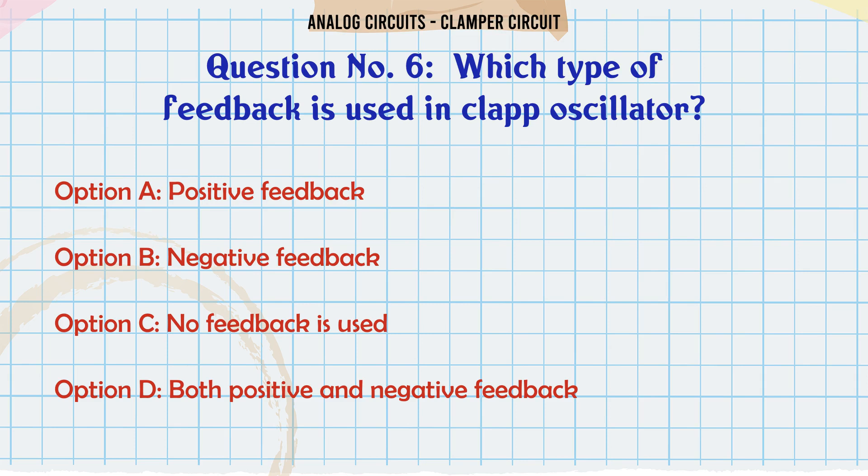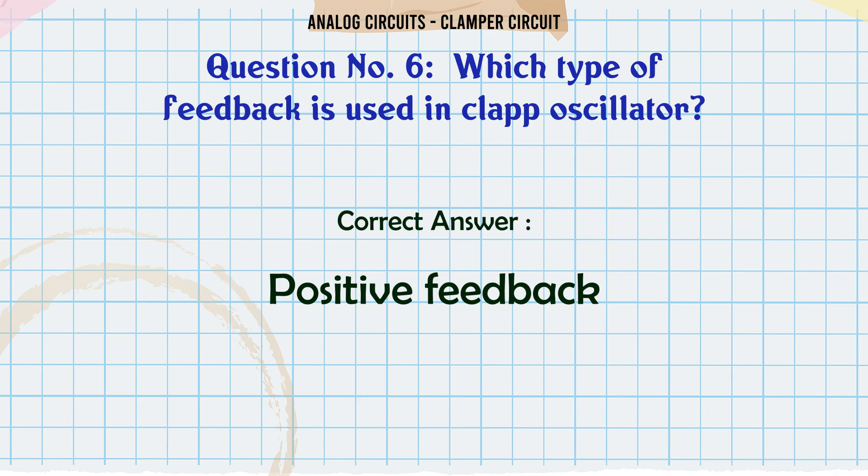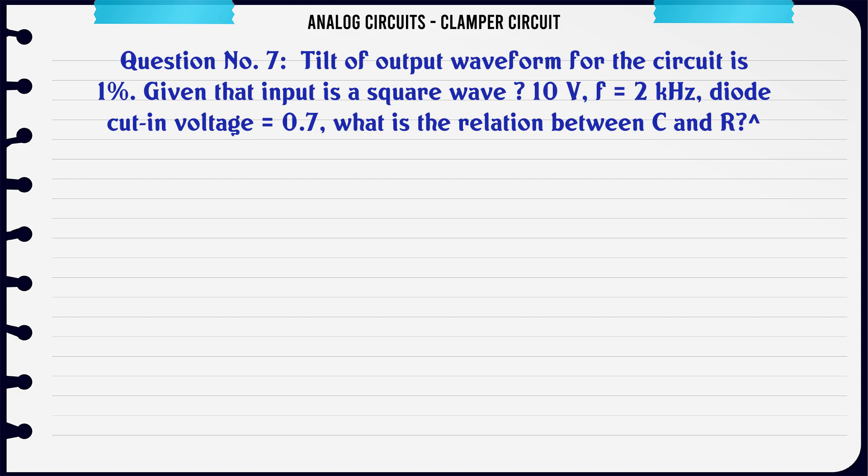Which type of feedback is used in clap oscillator? A: Positive feedback, B: Negative feedback, C: No feedback is used, D: Both positive and negative feedback. The correct answer is positive feedback.